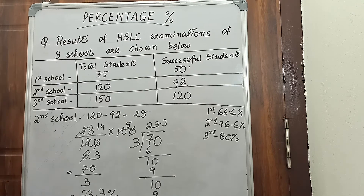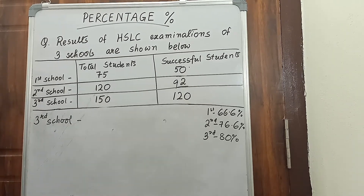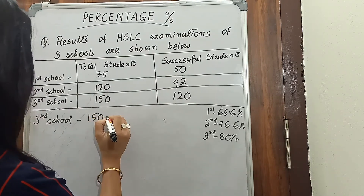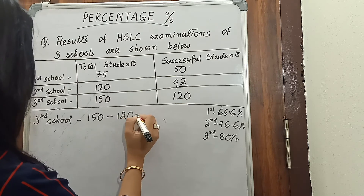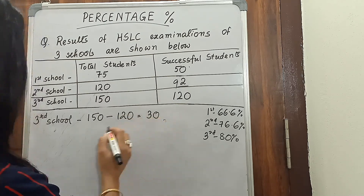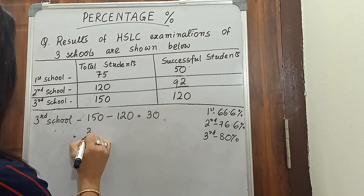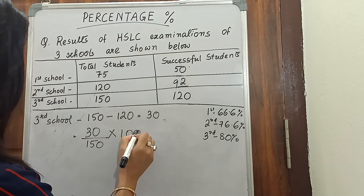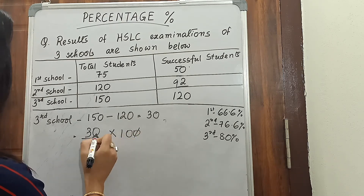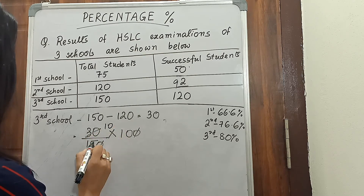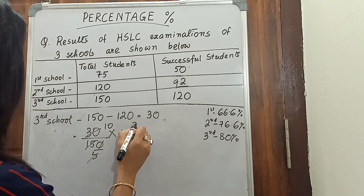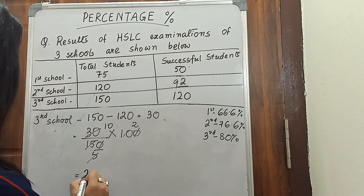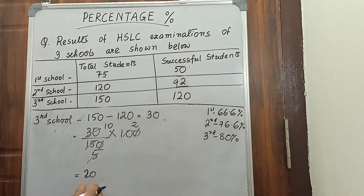In the same way we will find out for the third school. For the third school, 120 passed out of 150, so 150 minus 120 equals 30 students have not passed. So 30 out of 150 have not passed the examination. Multiplying 30 divided by 150 by 100: simplifying gives 1 over 5, and 1 into 20 is 20. So 20 percent have not passed the examination in the third school.